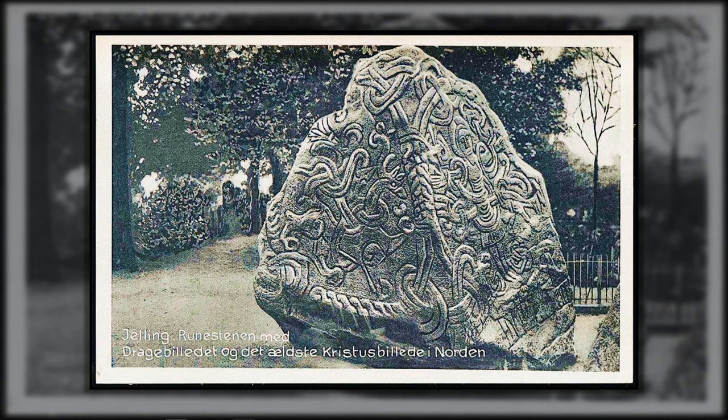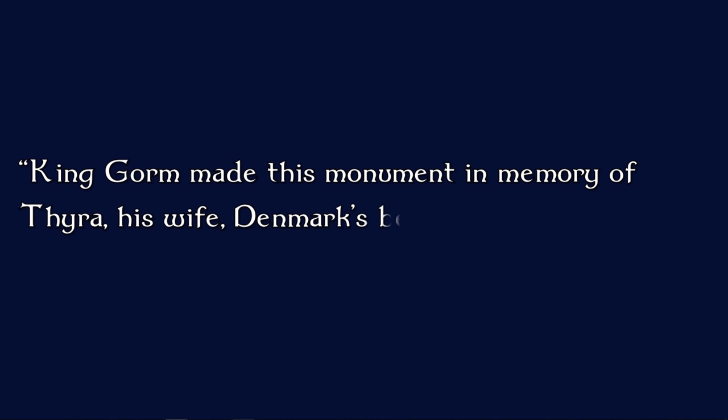The first time we hear about Denmark is on two runestones from quite close to each other in the second half of the 10th century, both found at Jelling. The first one reads: 'King Gorm made this monument in memory of Tura, his wife, Denmark's betterment.' This runestone was erected somewhere before the year 950 by King Gorm, called King Gorm den Gamle in Danish, which means King Gorm the Old.